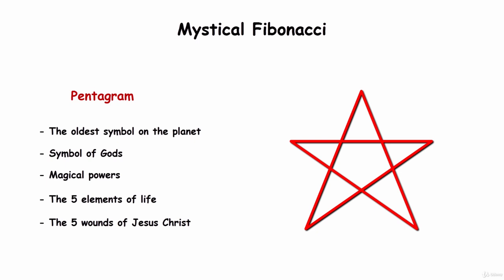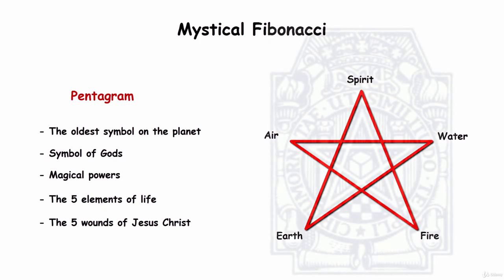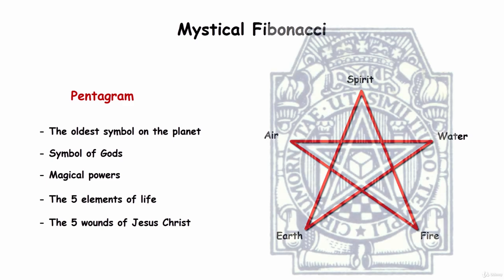Later, they assigned a specific ancient element to each of its five arms: earth, water, air, fire, and spirit on the highest arm. Almost all secret societies, among which the Freemasons are the most widely known, use the pentagram as one of their symbols.